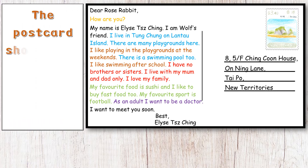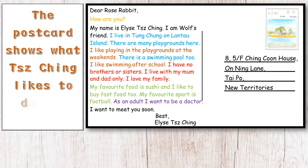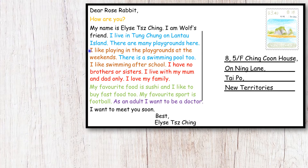The postcard shows what Tzijun likes to do for fun. We can see: 'I like playing in the playgrounds at the weekends. I like swimming after school.' In an introduction, telling your reader or listener what you like to do is very important.